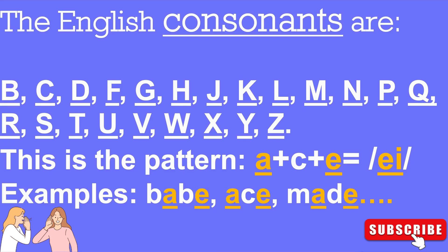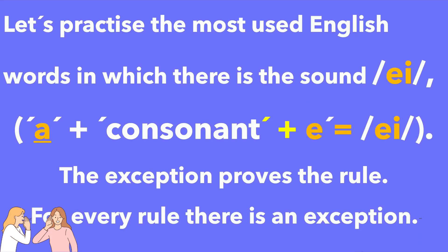Examples. In the word 'babe', we have the letter A, the consonant B, and the final letter E. So when we have a consonant between A and E, most of the time it is pronounced A — like in the example 'babe'. The second example: 'ace'. The third example: 'maid'. What we are going to do is find many words which have this pattern, which is A + consonant + E. Let's practice.